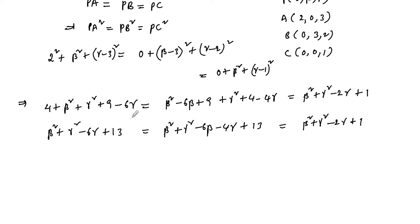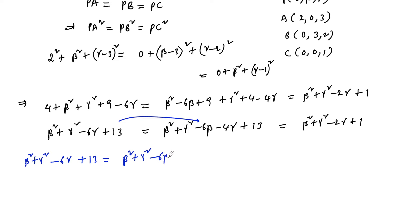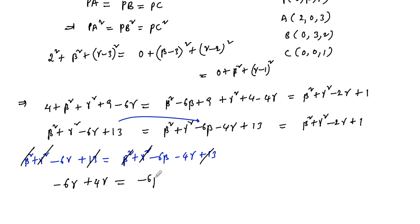Considering the first and second expressions: β² + γ² − 6γ + 13 = β² + γ² − 6β − 4γ + 13. The β², γ², and 13 terms cancel. We get −6γ + 4γ = −6β, so −2γ = −6β, which gives γ = 3β. This is equation 1.